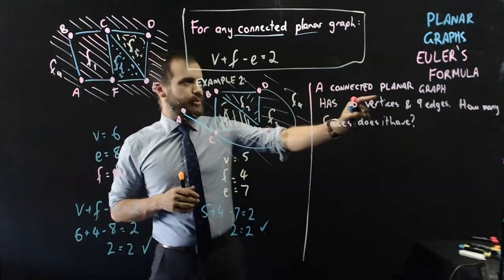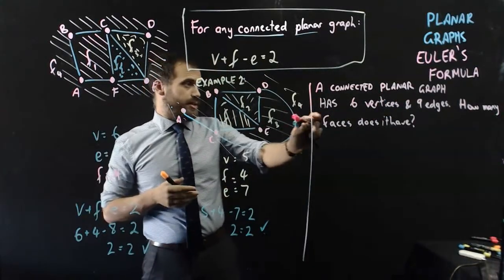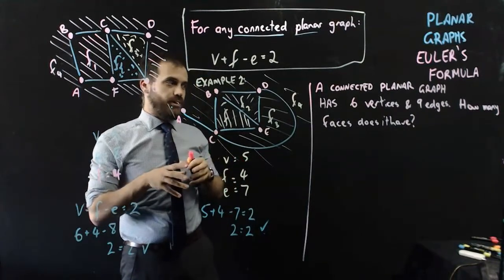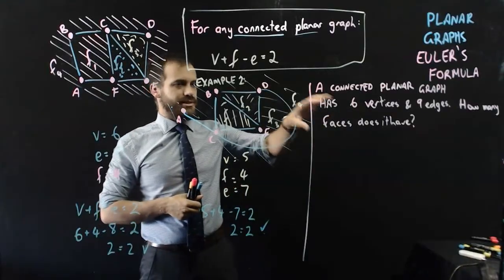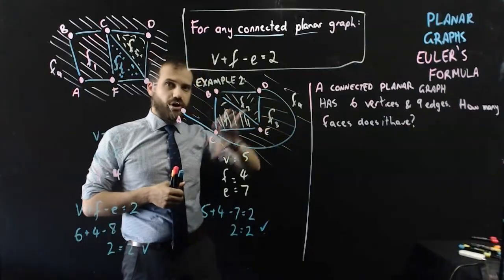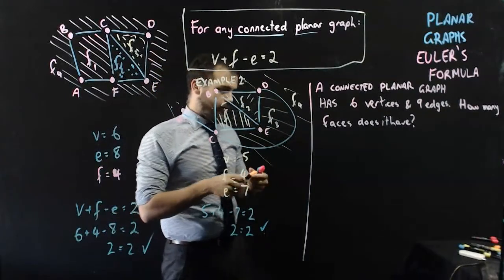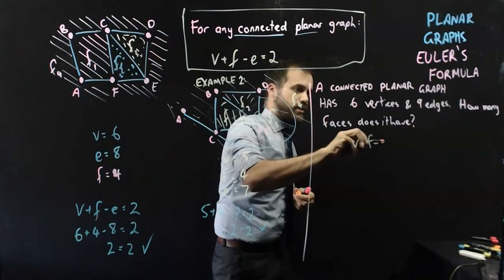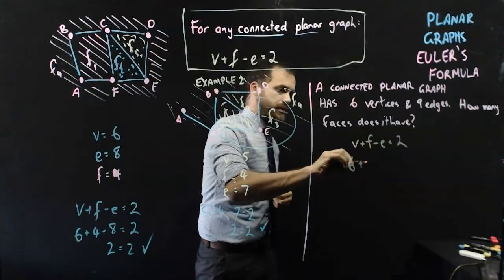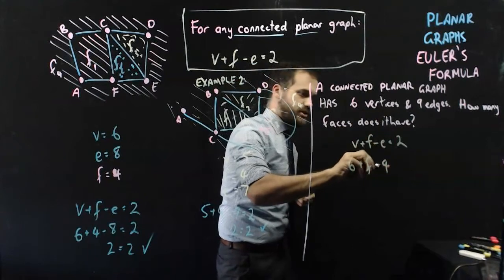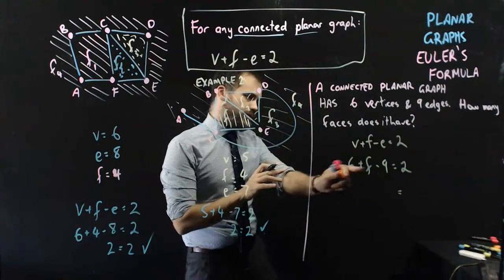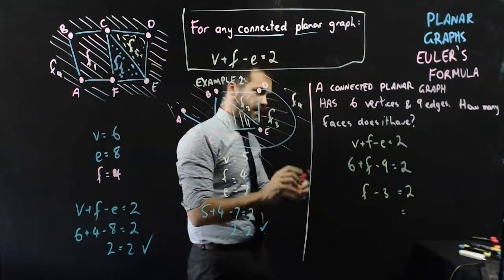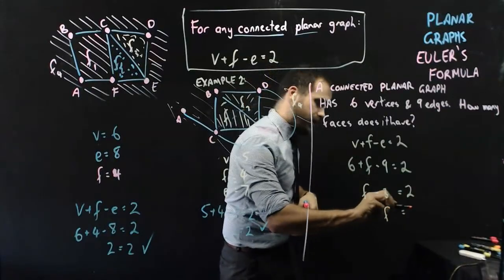A connected planar graph, which means that it follows Euler's rule, has six vertices and nine edges. How many faces does it have? Now, if you didn't know Euler's formula, you'd be in a bit of trouble here. You'd have to draw six vertices, you'd have to draw nine edges connecting them, and then you'd have to try to count the faces. But we don't have to do that here. We can just say, well, Euler's formula for a connected planar graph is V plus F minus E equals two. Six vertices plus some unknown amount of faces minus nine edges is equal to two. Okay. I can group the six and the nine. So six minus nine is minus three. So now I have F minus three equals two. And I can add three to both sides, and that'll give me F equals five.